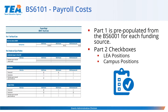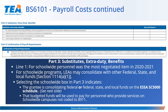The BS60101 supporting budget schedule is for payroll costs. Part 1 is pre-populated from the BS6001 budget summary for each funding source. If no funds are budgeted for IDEA-B formula, preschool, or discretionary def, then those columns will be grayed out in Part 2. Instead of requiring a number of positions, there are checkboxes, which gives more flexibility with amendments. Be sure to select the checkboxes under the appropriate fund source for the types of positions you are budgeting for in Part 2. In Part 3, which covers substitutes, extra duty, and benefits, the school-wide personnel checkbox was the most negotiated item in the 2020-2021 SPED application.